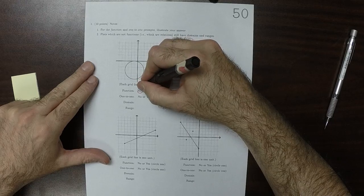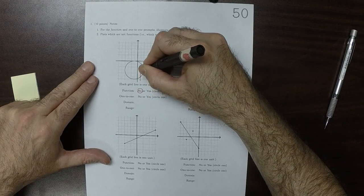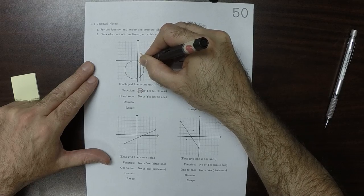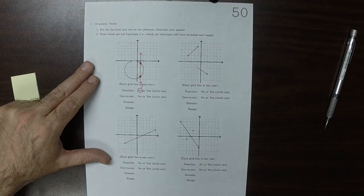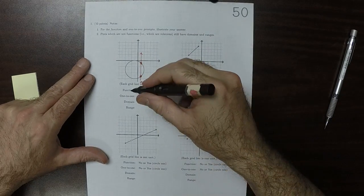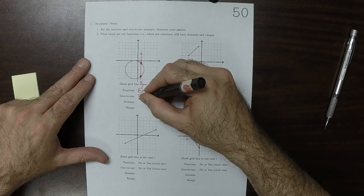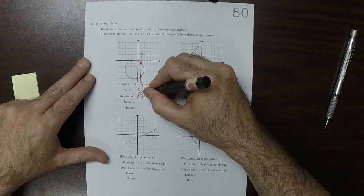The reason it is not a function is, for example, this vertical line has one, two intersections. Is it one to one? And the answer is no, because it's not even a function.